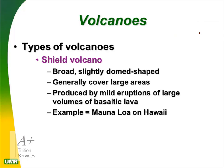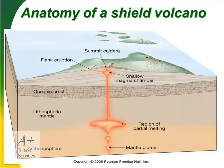There are different types of volcanoes. Shield volcanoes are broad, slightly dome-shaped, generally cover large areas, and produce mild eruptions of large basaltic lava — they are not violent. An example is Mauna Loa in Hawaii. When these erupt we see pāhoehoe lava flowing out.